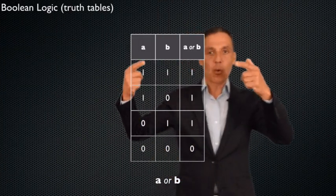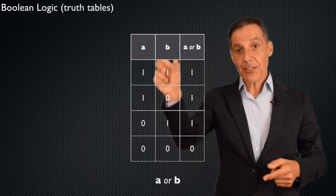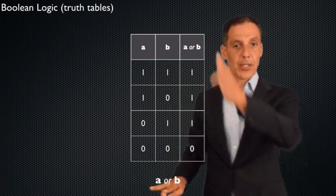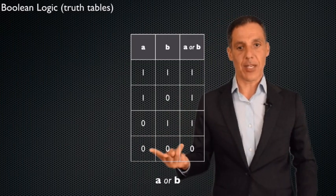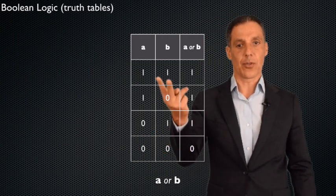Let's do the logical OR. Same truth table. This side stays exactly the same. Two columns for the input, one column for the output, and there are four rows corresponding to the same thing: zero-zero, zero-one, one-zero, one-one.